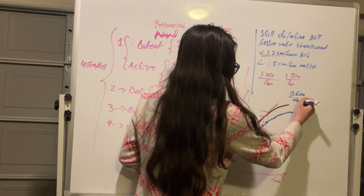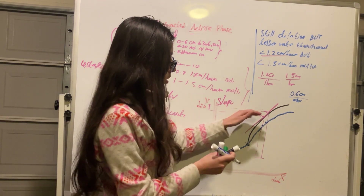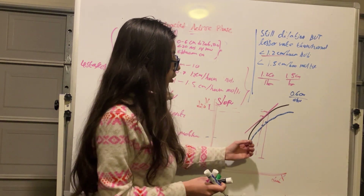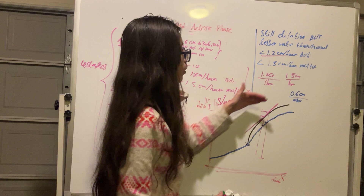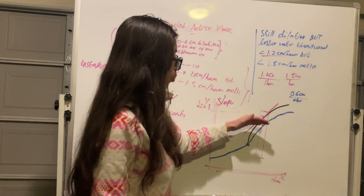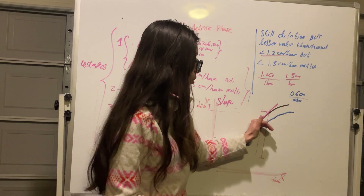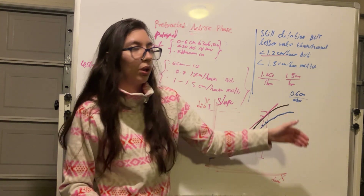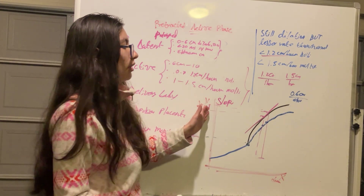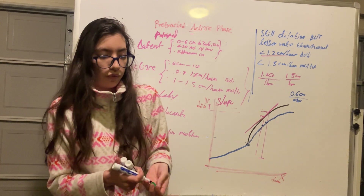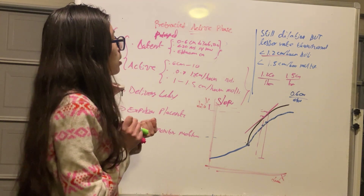We still have dilation of the cervix, but to a lesser rate than normal — normal being 1.2 centimeters dilation per hour. With prolonged or protracted active phase, in each hour we will have less dilation than normal, but we will still have dilation. This is in contrast to the previous video: if there is no change at all in cervical dilation, that is an arrest of the active phase, not a prolonged active phase.